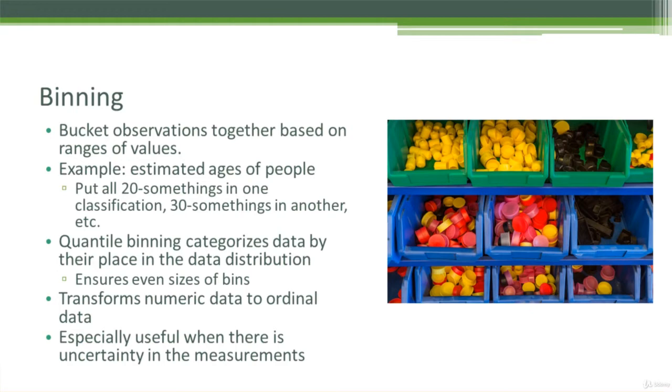There's also something called quantile binning that you should understand. The nice thing about quantile binning is that it categorizes your data by their place in the data distribution. So it ensures that every one of your bins has an equal number of samples within them.